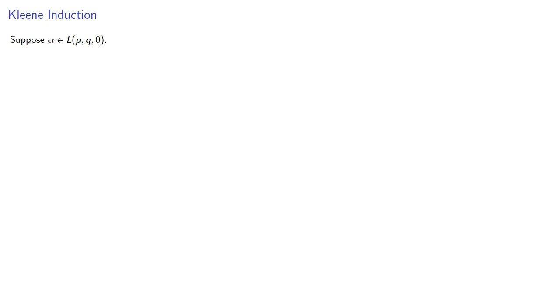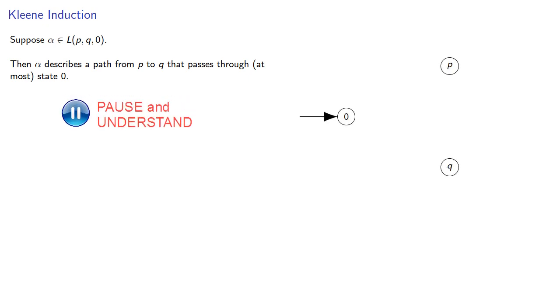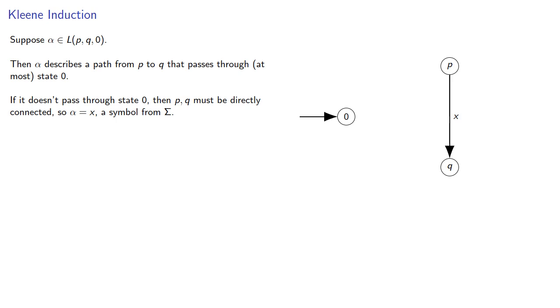Suppose alpha is a string in L(p,q,0). Then alpha describes a path from p to q that passes through at most state zero. If it doesn't pass through state zero, then p and q must be directly connected. So alpha must be x, a single symbol from our set of symbols. But any single symbol is a regular expression.